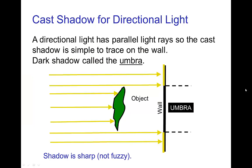The simplest kind of cast shadow comes from a directional light, so the light rays are all parallel, and the shadow that is cast on a surface is very simple. It just has the outline of the object, and the shadow has all umbra.